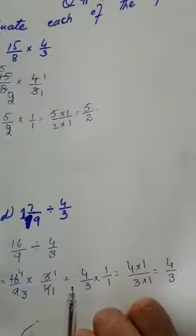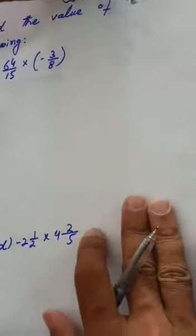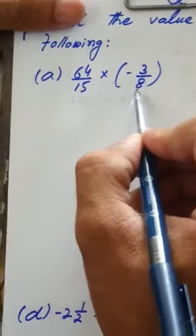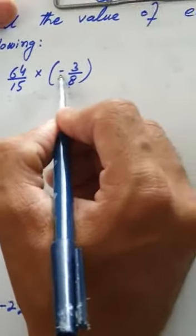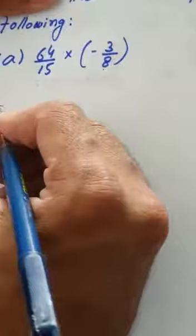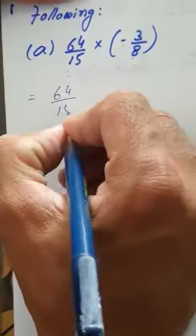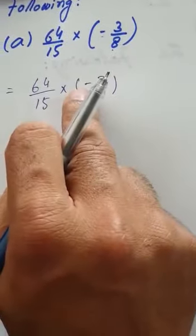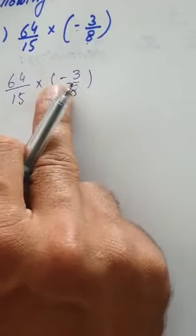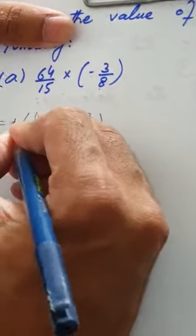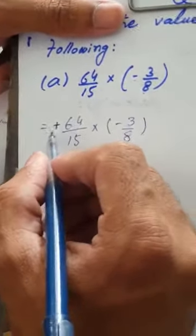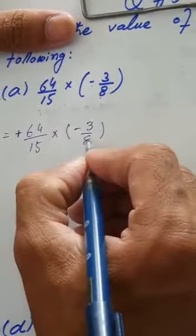Now let's move to question number 5. In question number 5 we are given negative fractions. If there is a negative fraction, you will neglect the sign of negative for now and solve it. We are given 64 over 15 multiplied by minus 3 over 8. Neglect the minus symbol and solve — if no symbol is placed with a number, it means there is a plus.